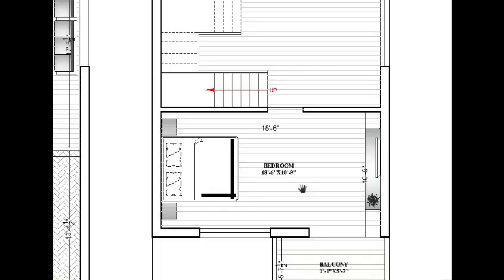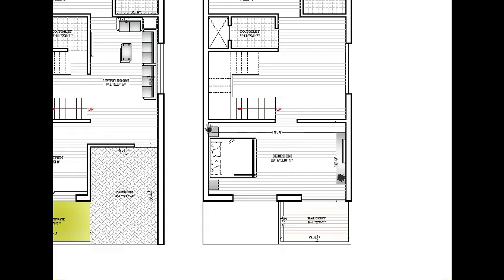Bedroom number one on the first floor has a size of 18 feet 6 by 10 feet 9. Horizontally here to here is 18 feet 6, and vertically here to here is 10 feet 9. Here is the adjoining balcony.